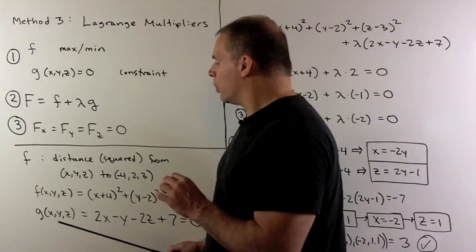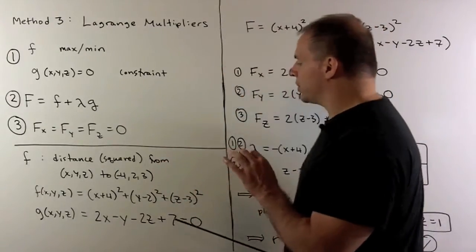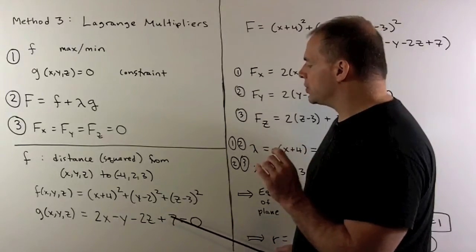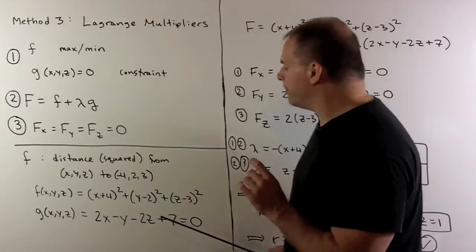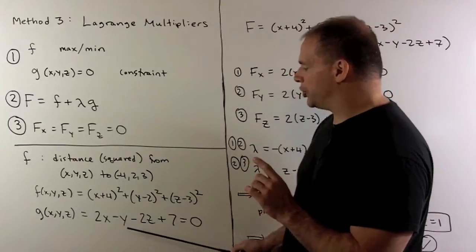For our constraint function, we're only going to consider our function for points on our plane. So, we'll just make sure everything is on one side, zero on the other. Then, we have our f and our g.